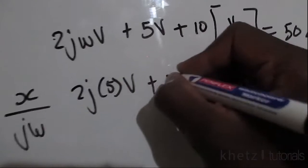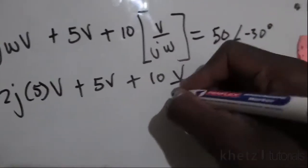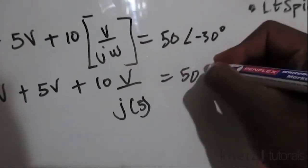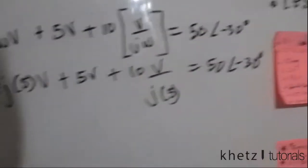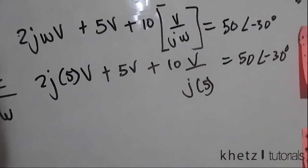This equals to 50 with an angle of negative 30 degrees and our aim is now to find V. V is now the only variable in our equation so let's proceed.